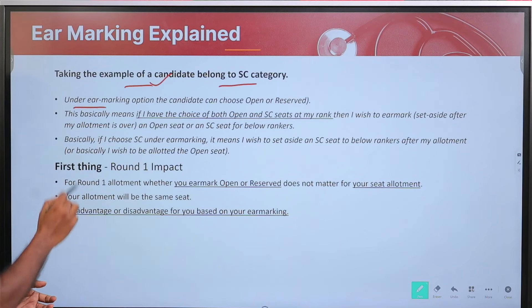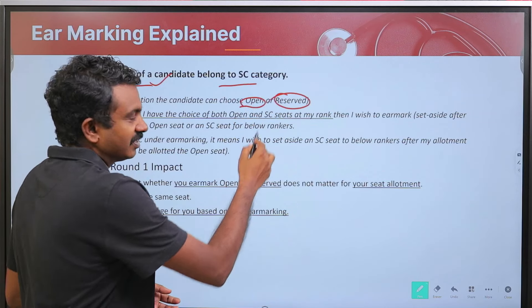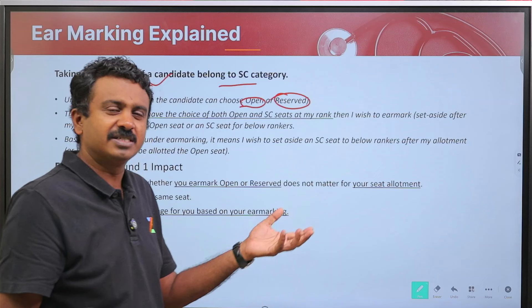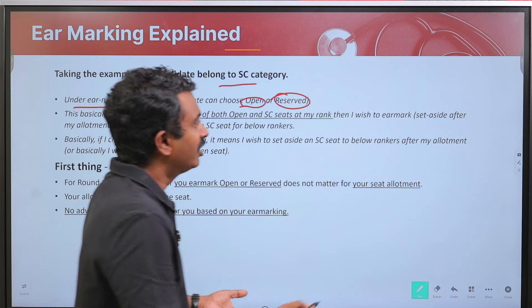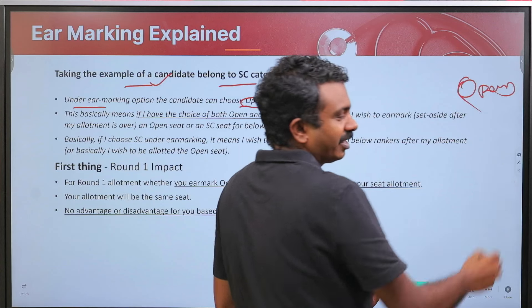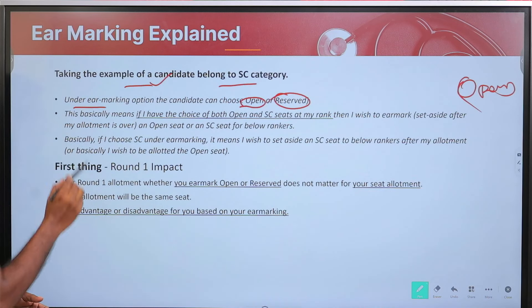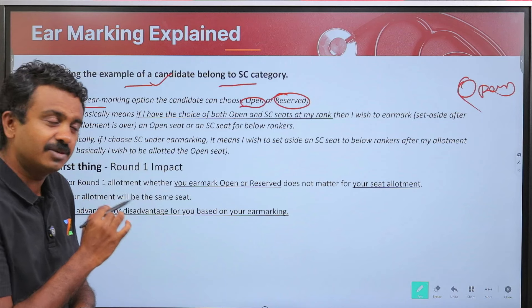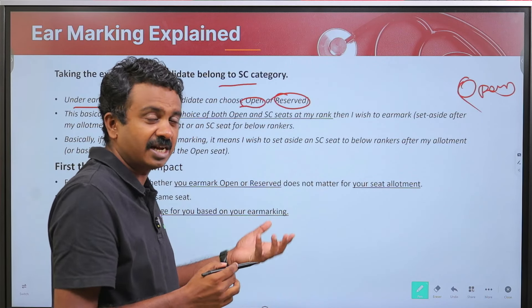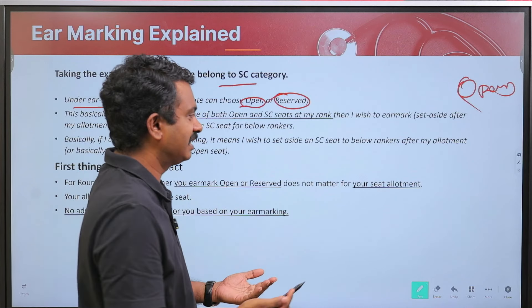Under the ear marking option, when you are filling choices, you can choose open or reserved. Reserved means your category basically. If you are an open category candidate, there is nothing to choose because you will be eligible only for open seats. A reserved category candidate is eligible for both open seats and reserved category seats. So in this scenario, the SC candidate will be eligible for both open seats and SC category seats.